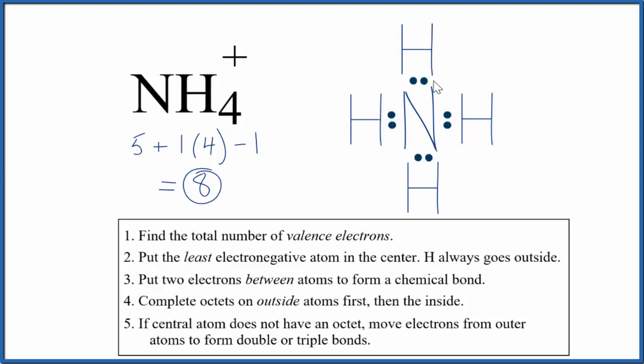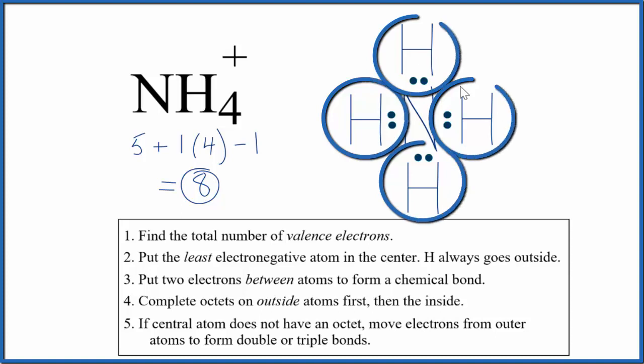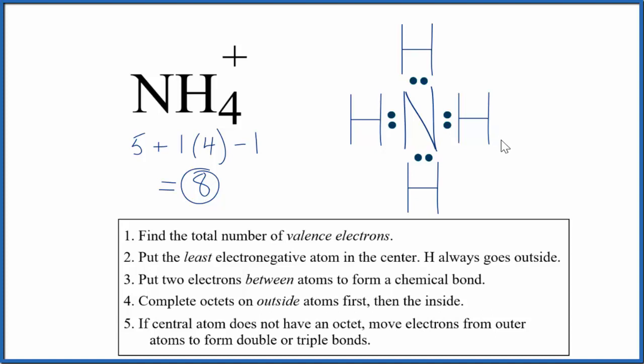At this point, we've used 8 valence electrons. We only have 8 valence electrons for the NH4 plus Lewis structure. Each hydrogen has 2 valence electrons. And that's okay because hydrogen only needs 2 for its highest energy level to be full.